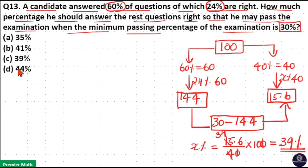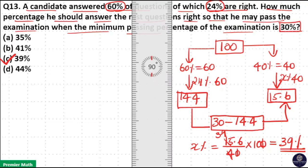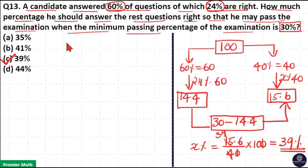So option C is the answer. Now if you have difficulty calculating this, let's use a different method — the allegation method. You can solve this question using the allegation method as well.